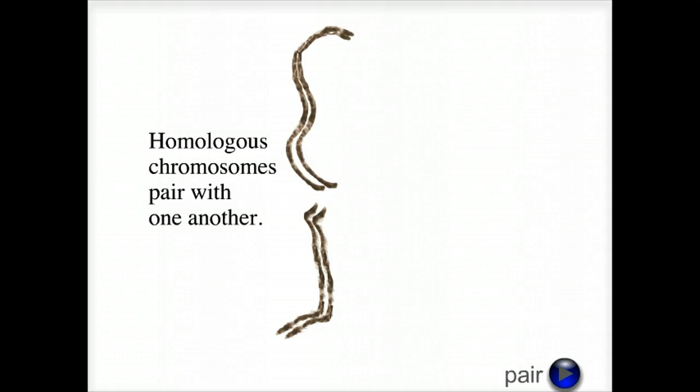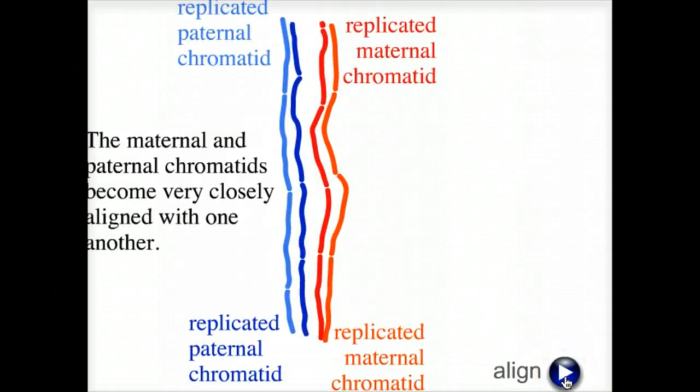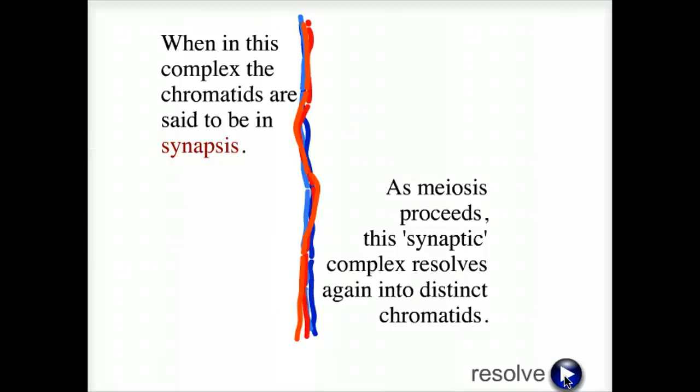Homologous chromosomes will pair with one another. The maternal and paternal chromatids become very closely aligned with one another. When in this complex, the chromatids are said to be in synapsis.